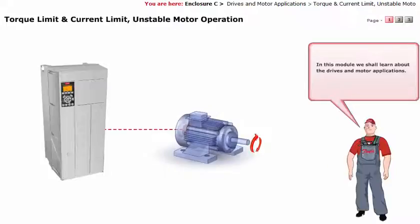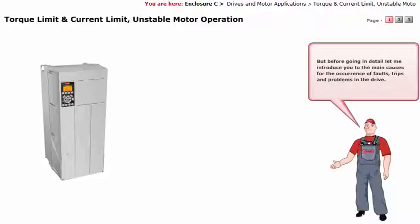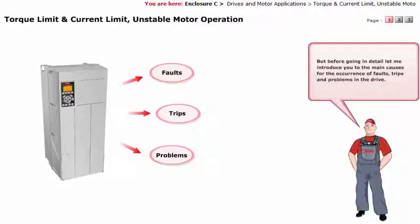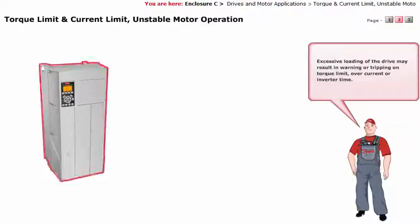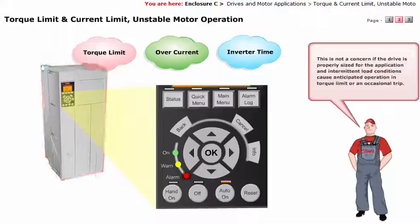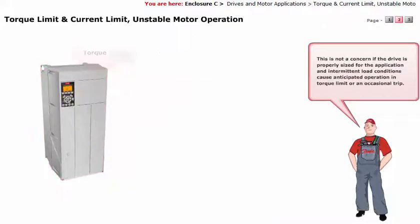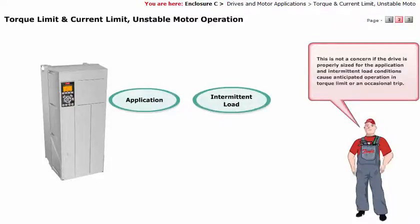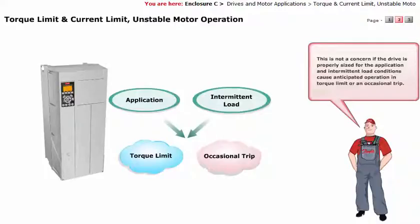In this module, we shall learn about the drives and motor applications. But before going into detail, let me introduce you to the main causes for the occurrence of faults, trips and problems in the drive. Excessive loading of the drive may result in warning or tripping on torque limit, over current, or inverter time. This is not a concern if the drive is properly sized for the application, and intermittent load conditions cause anticipated operation in torque limit or an occasional trip.